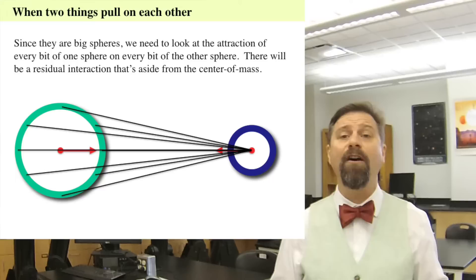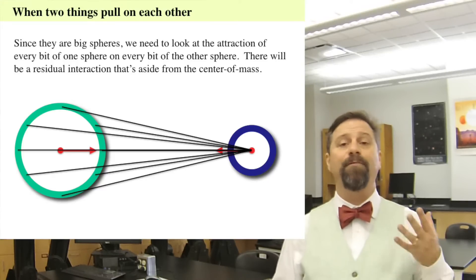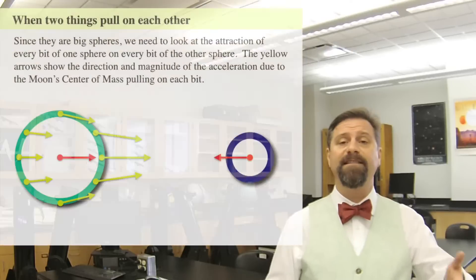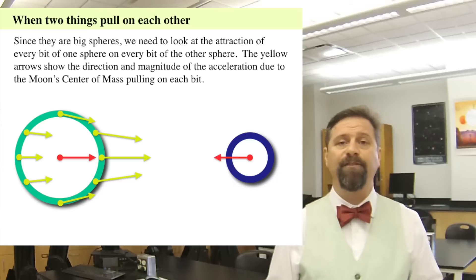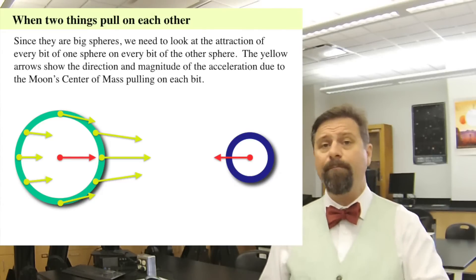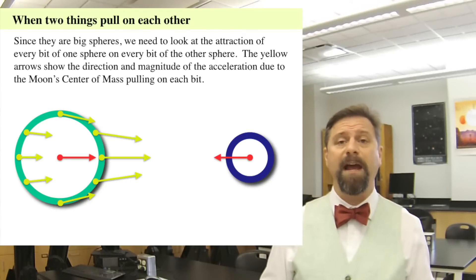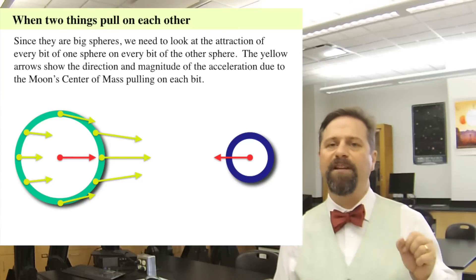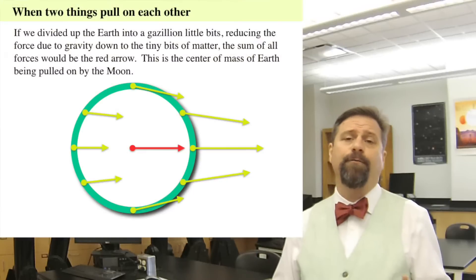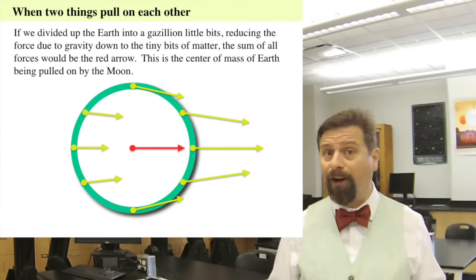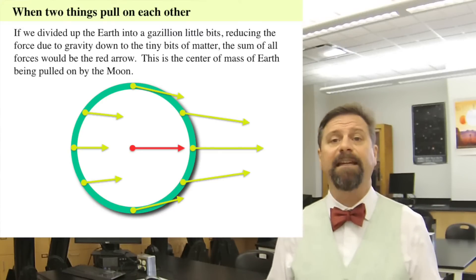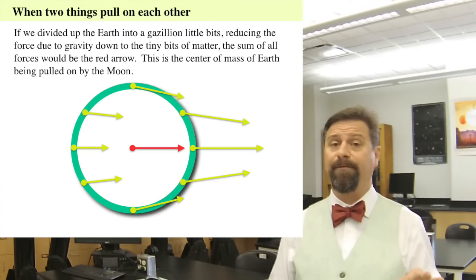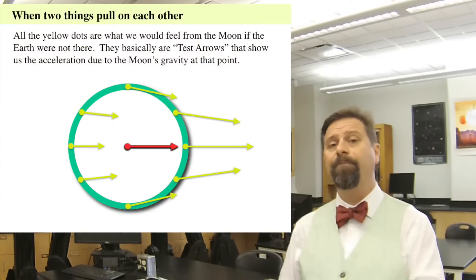Let's show the effect of the Moon on all the elements of the Earth. We break it up into a series of objects on the surface. The magnitude of the force on these locations on Earth is represented by yellow arrows. The red arrow is the center of mass — all the masses combined together must equal that red line. Each little element of the Earth is being attracted towards the Moon according to the yellow arrows. These are test arrows — like a car, a building, a mountain, a lake, a tiny pebble on the surface — all being attracted by the Moon. The acceleration experienced by each element on the Earth due to the Moon is what those yellow arrows represent.